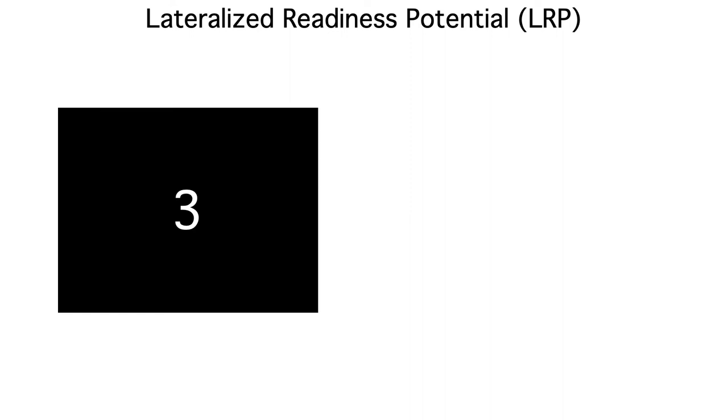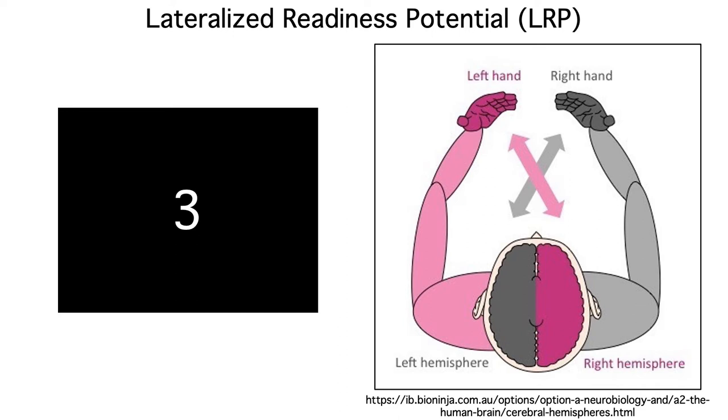You get it in tasks where you need to make either a left-hand or right-hand response depending on what stimulus you see. For example, subjects might be instructed to make a left-hand response for odd numbers and a right-hand response for even numbers. Just like the visual system, the motor system is contralaterally organized, with the left hemisphere controlling the right hand and the right hemisphere controlling the left hand.